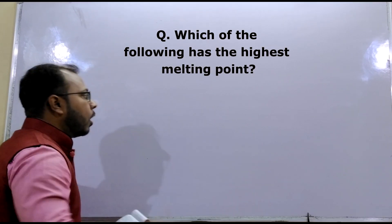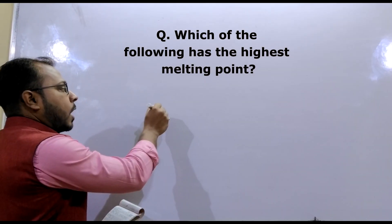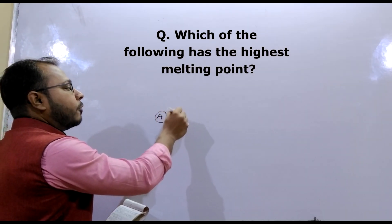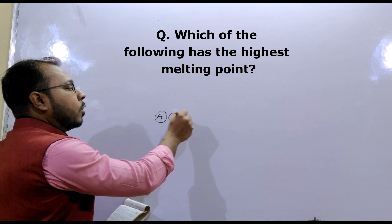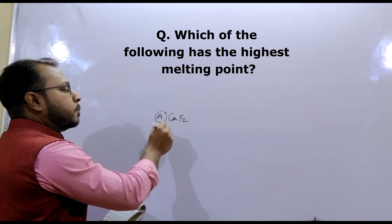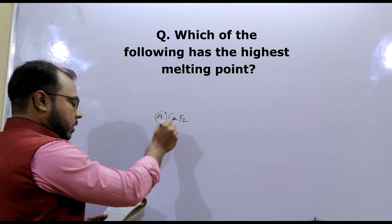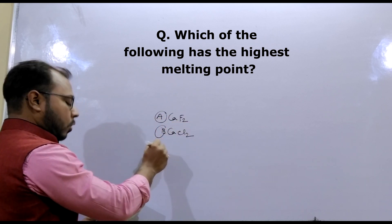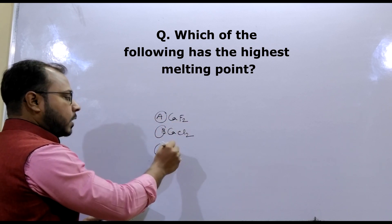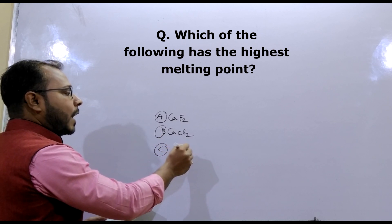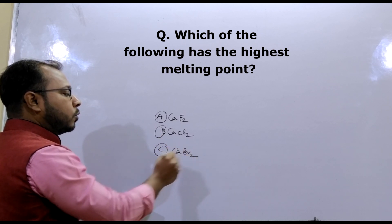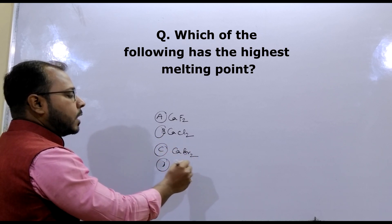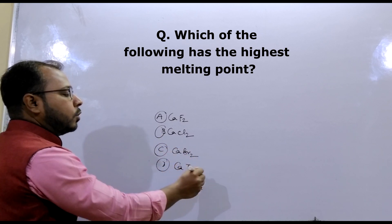The options are: (A) CaF2, (B) CaCl2, (C) CaBr2, and (D) CaI2.